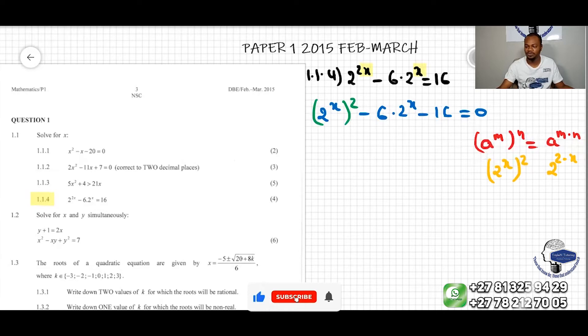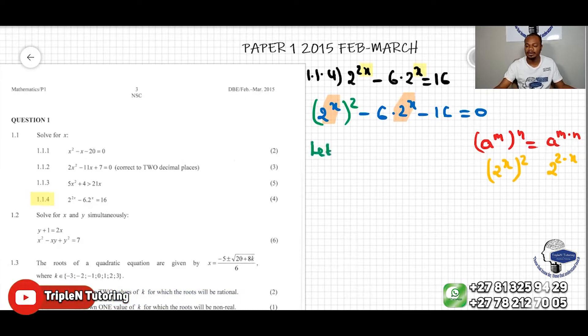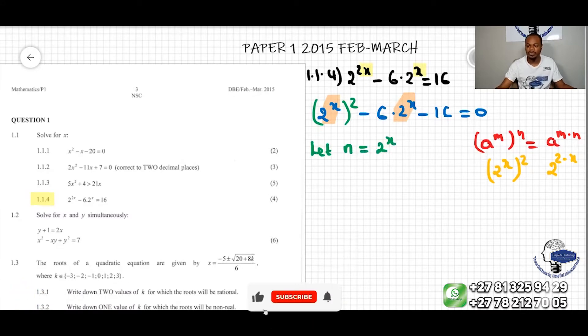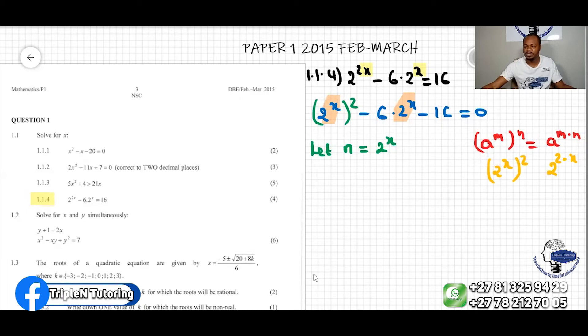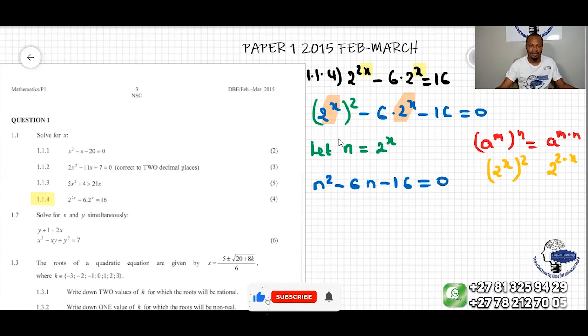Because I wanted to have 2 to the x here and 2 to the x over there. For good reason. Because I want to say let n equal to 2 to the x. Now, we're going to write over here, instead of writing 2 to the x to the power of 2, I'm going to write n because we substitute 2 to the x by n. Equation will become n squared minus 6n minus 16 equal to 0. Now we have a quadratic equation, easy enough to solve.